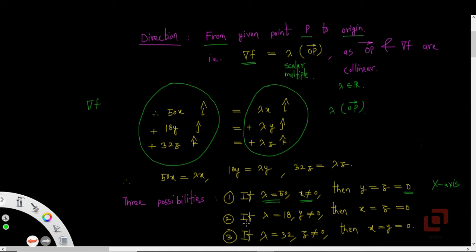Let's now consider the second possibility where we apply the same process. If 18y = λy, then λ must equal 18, assuming that y ≠ 0, and in that case x and z coordinates will be 0.